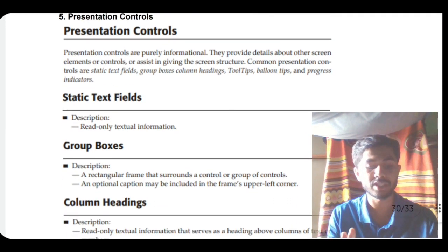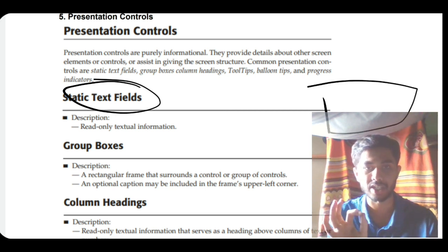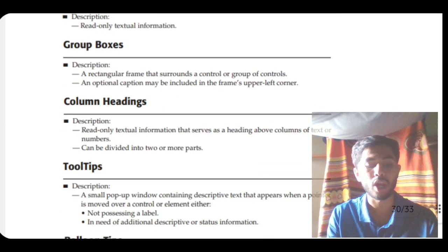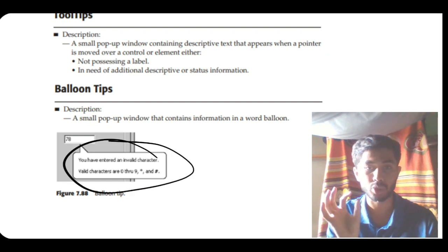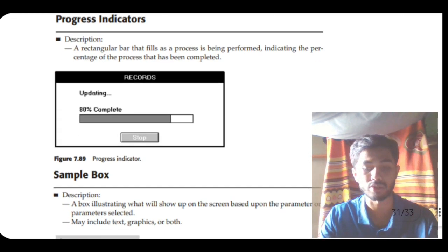Moving on to presentation controls — these describe how things are presented. A static text field simply displays text. A group box groups similar items together in boxes. Column headings contain the column heading labels. Tool tips provide hints for whatever we are about to select. A balloon tip shows information in the shape of a balloon when hovering over or selecting an element.